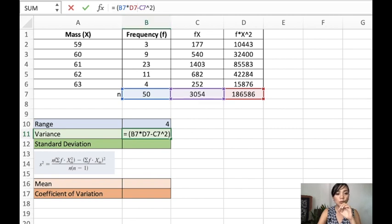Again, n times the sum of the x squared minus fx raised to 2. And then we divide it to the denominator, which is n, 50 multiplied to n minus 1. You can write 49 if you want to, because that is 50 times 49. And another parenthesis so that we can separate the numerator and the denominator. Let's click enter, and that is the variance.